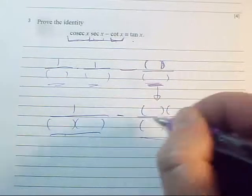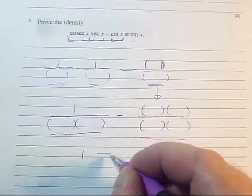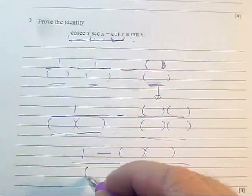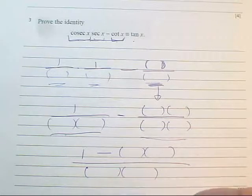So now you can put it over one fraction, you're going to have one minus something, something times something on the top, all over a common denominator on the bottom.